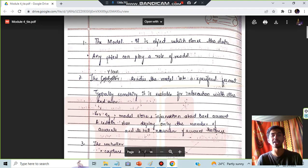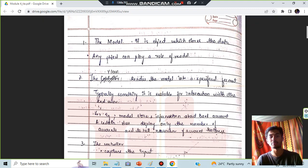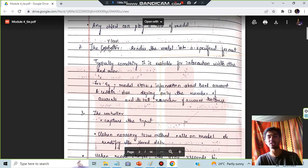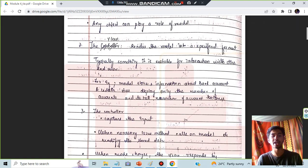The model is an object that stores the data. Any type of object can play the role of the model. The view renders the model in a specific format, how it should be looking like. And the controller takes the input, processes it, and gives back the output.